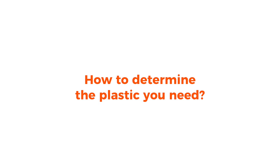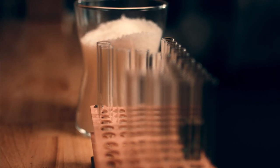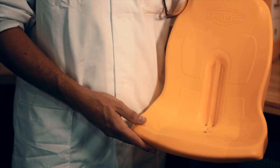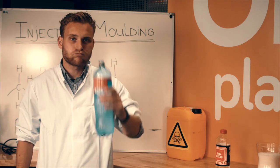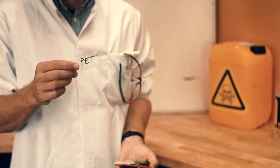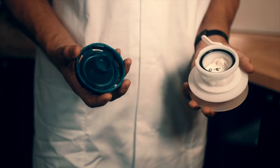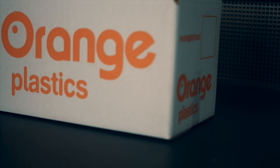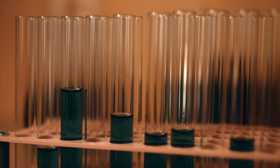How do you determine the plastic you need? When deciding on the most appropriate type of plastic for your product, think about its desired form and function. Should it be firm or flexible? Solid or transparent? Should it be resistant to heat, cold, pressure, or chemicals? Is it meant for single or recurring use? An injection molding partner such as Orange Plastics will guide you through the decision process in choosing the optimal type of plastic.